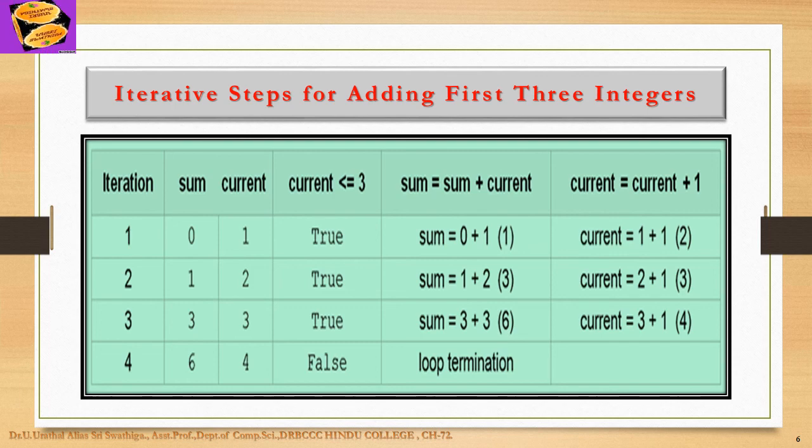This time, sum becomes 6 and current becomes 4. Thus when control returns to the top of the loop, the condition is false and the loop terminates. This process is summarized in the figure.